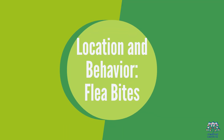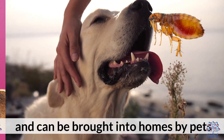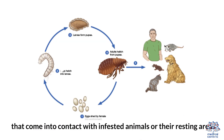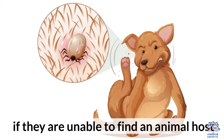Fleas are often found on animals and can be brought into homes by pets. Therefore, flea bites commonly occur on areas of the body that come into contact with infested animals or their resting areas. Fleas can also bite humans directly if they are unable to find an animal host.